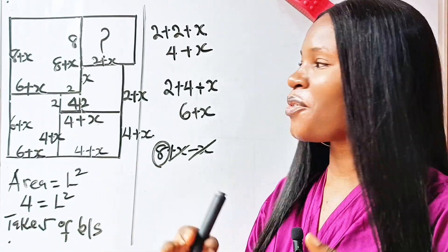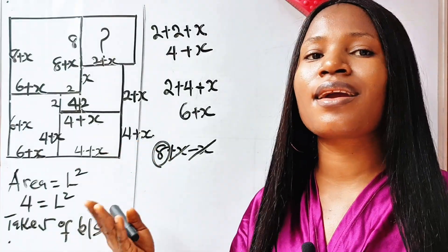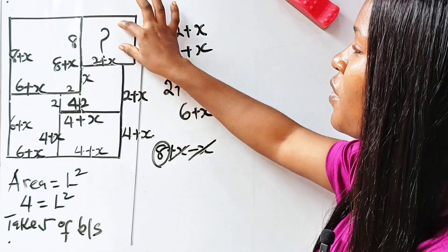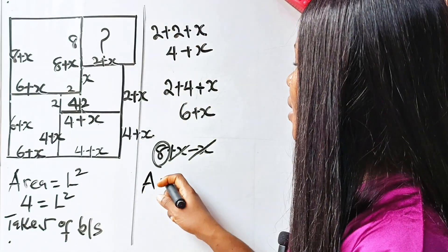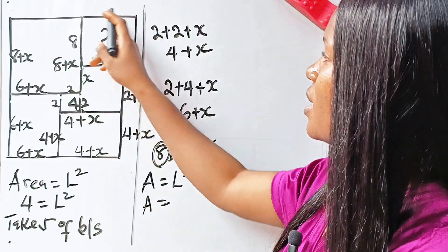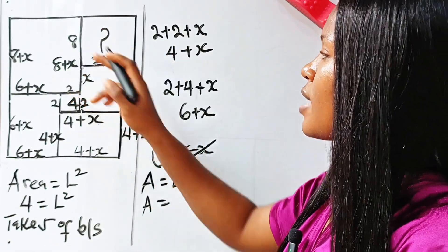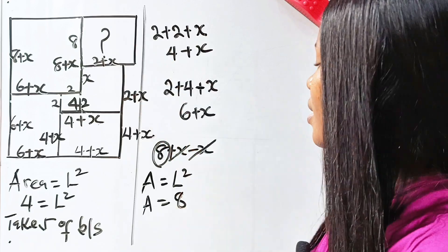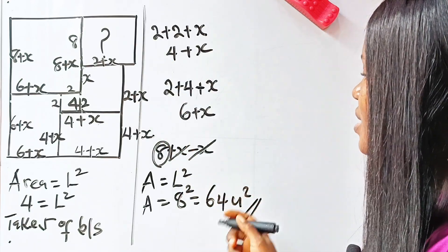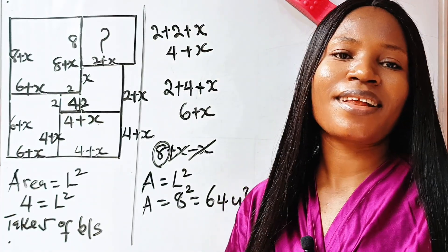Now you can see where that result comes from. Therefore, the area of this particular square is length squared, and the length of this square is 8. So the area equals 8² = 64 square units. That is the answer. Thank you so much for watching — see you in the next video.